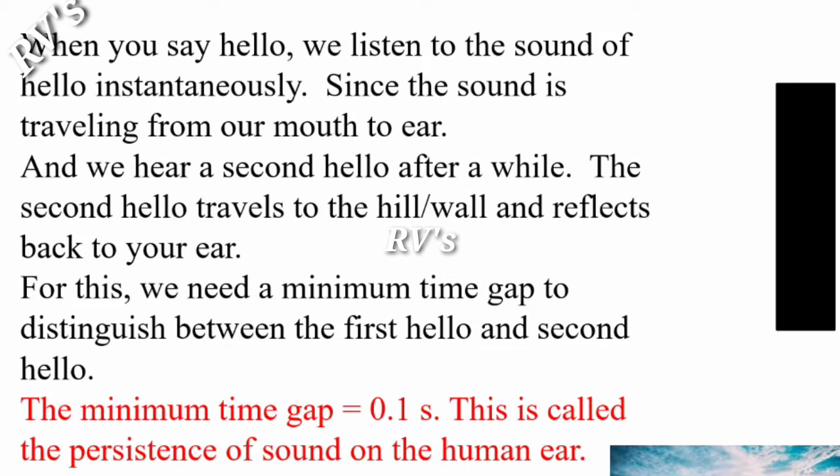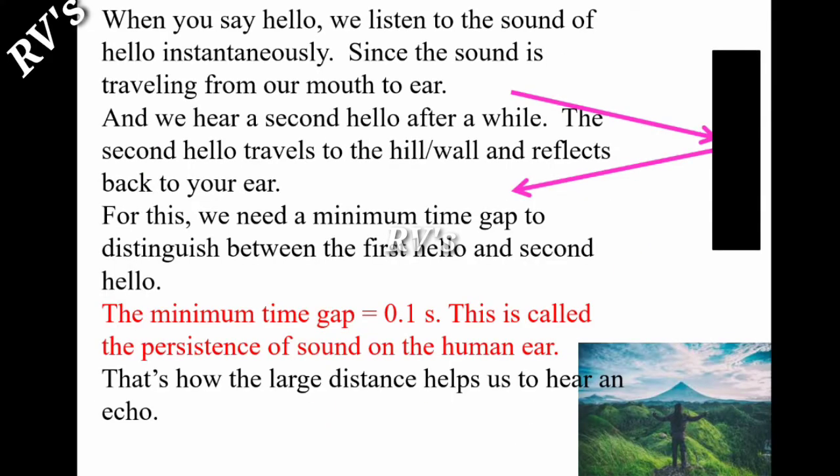When you say hello, we listen to the sound of hello instantaneously. Since the sound is traveling from our mouth to ear, we immediately listen to that. And we hear a second hello after a while. The second hello travels to the hill or wall and reflects back to the ear. For this, we need a minimum time gap to distinguish between first hello and second hello.